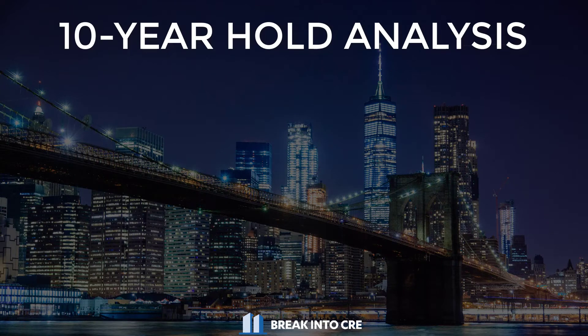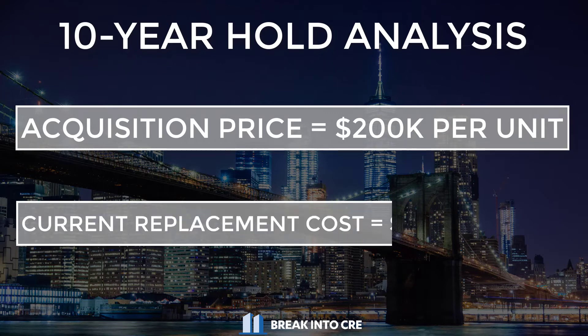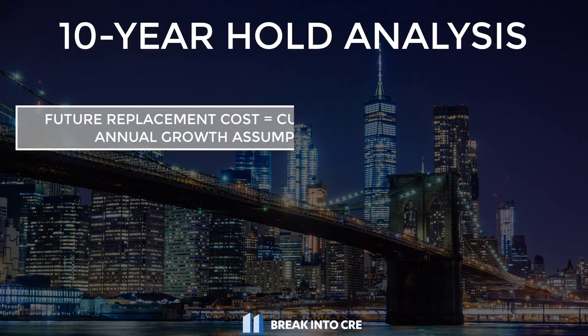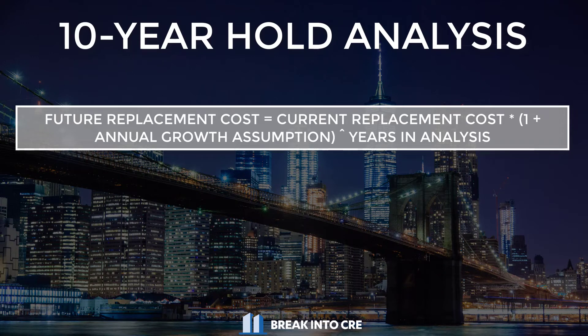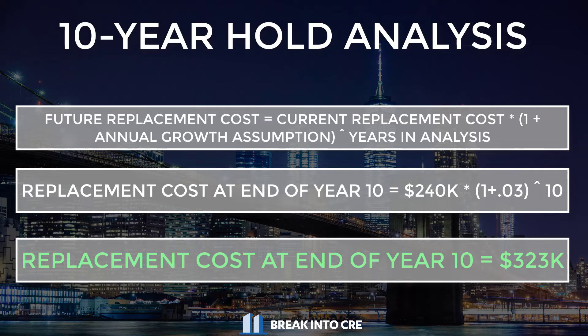So let's say that today you're analyzing a 100-unit apartment building that you want to buy. And let's say you're buying the property at $200,000 per unit today, and replacement costs today — or the cost to build a similar product in a similar location — would be $240,000 per unit. Since you're buying below replacement cost, this is a good indicator that you're not overpaying for the property, because it's going to cost developers more to build similar comparable product in a similar area. So what you would do is grow that replacement cost today at an annual assumed growth rate for every year of your analysis and figure out what that replacement cost is likely to be when you go to sell the deal.